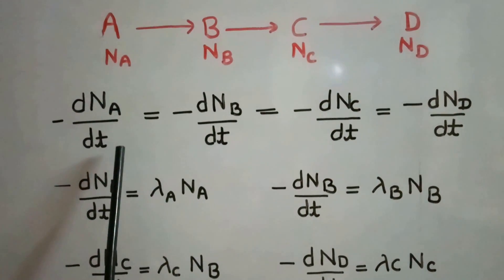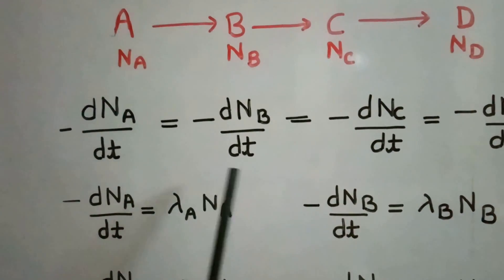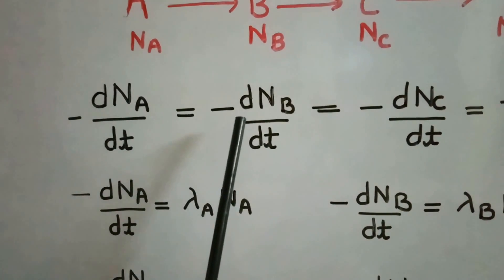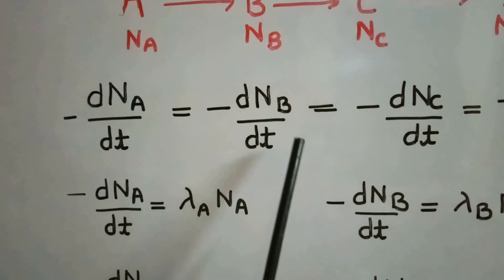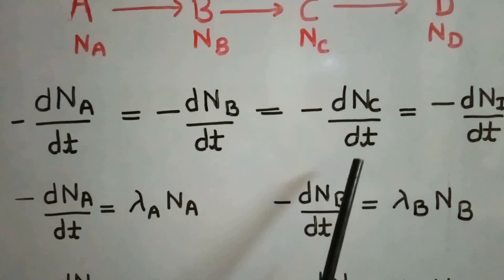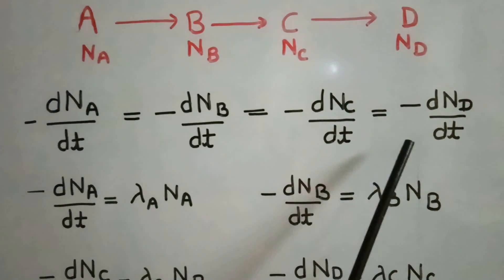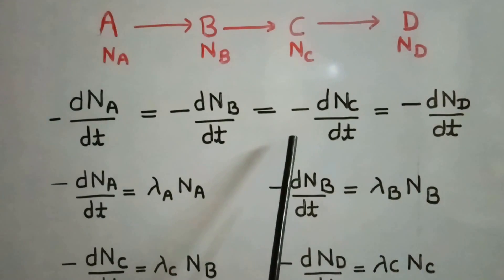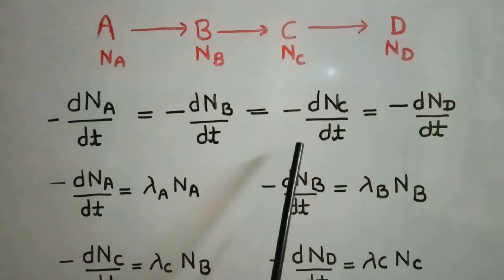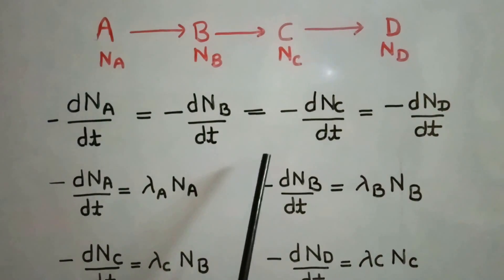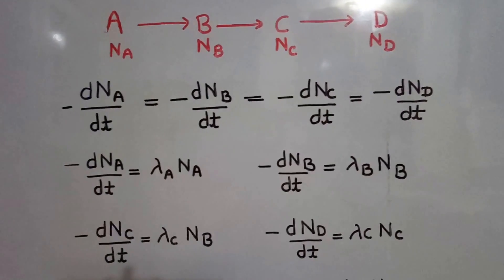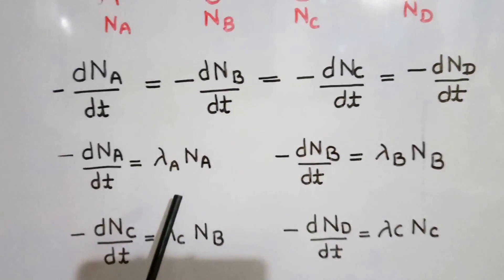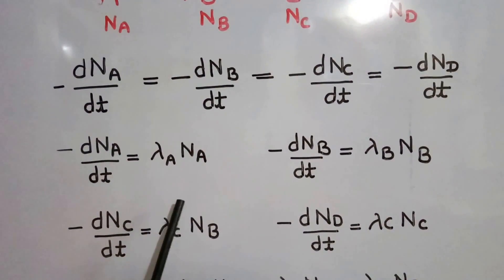So the rate of disappearing of all elements will be equal: minus dNA/dT equals minus dNB/dT, which equals minus dNC/dT, which equals minus dND/dT. The negative sign is imposed because the concentration of each element is decreasing. But the rate of disappearing of each element depends upon the number of atoms present at that time.